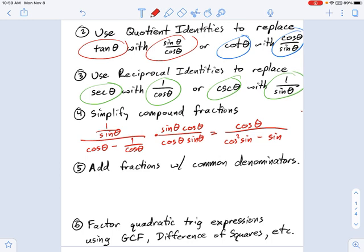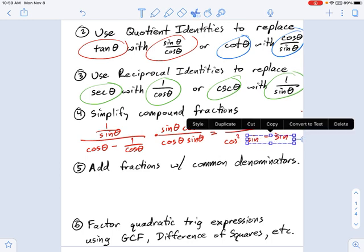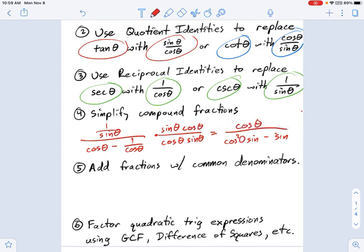I'm using shorthand here. There should probably be some thetas in there just to keep everything correct. This is cosine squared of theta times sine of theta minus sine of theta. And maybe that's going to be easier for you to solve in some way. Maybe that's going to get you where you need to go. But the important thing is getting rid of the compound fractions.